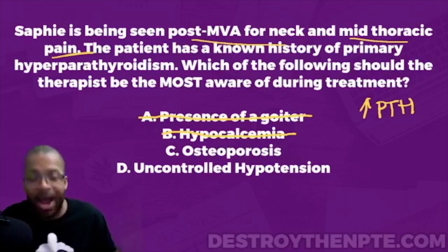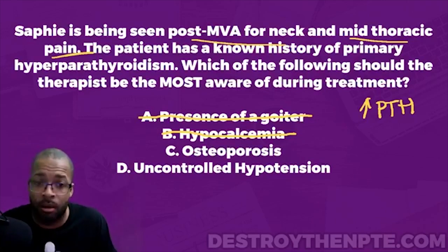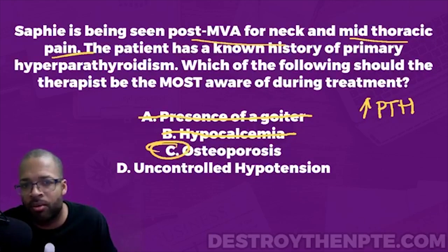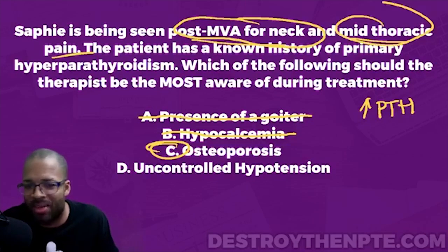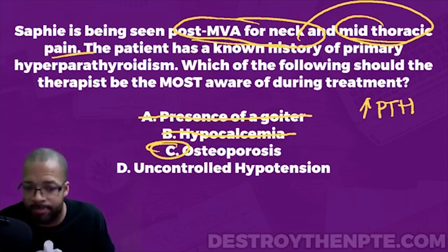I really like C. And looking back at the question, it fits perfectly - because the question brought in this whole idea of MVA for neck and mid-thoracic pain. One of the things we do to the thoracic spine is manipulations and mobilizations. What do we need to be aware of? Osteoporosis. That fits.